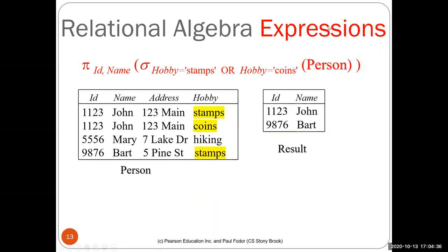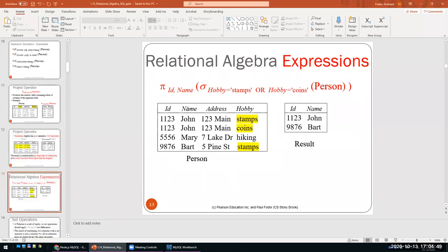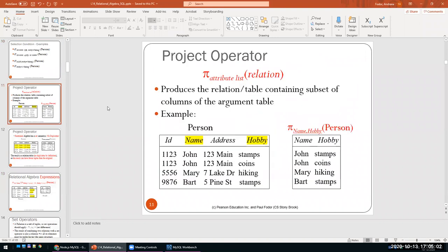A question from Connor: how can we have two rows with the same primary key? I didn't define id as a primary key here — this relation has no primary key yet, or you can consider the entire tuple as the key. If you did define id as a primary key, then those two tuples with the same id cannot both exist. Good question.